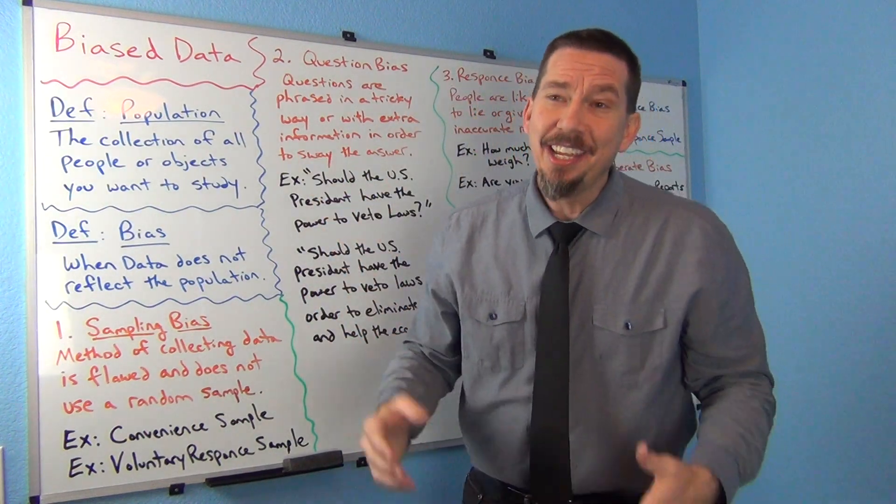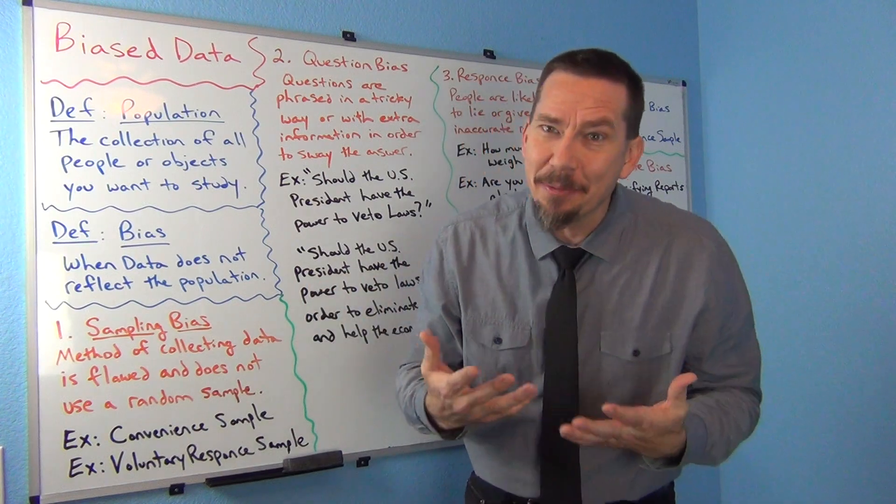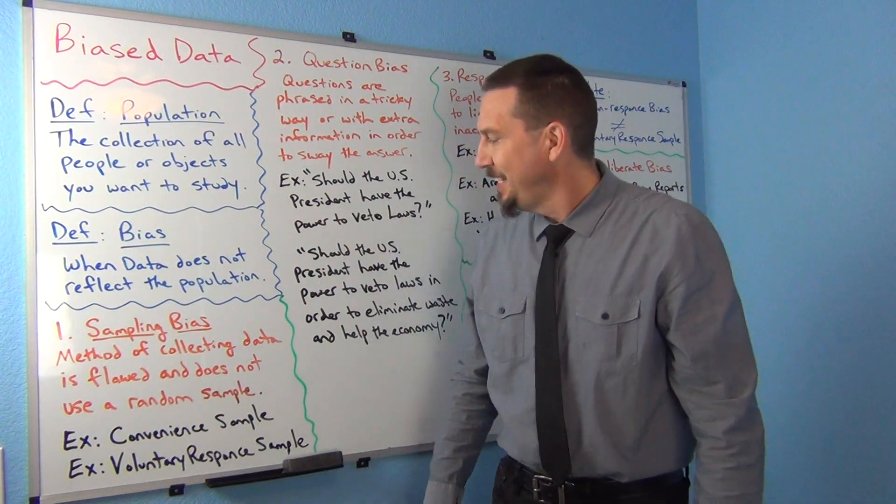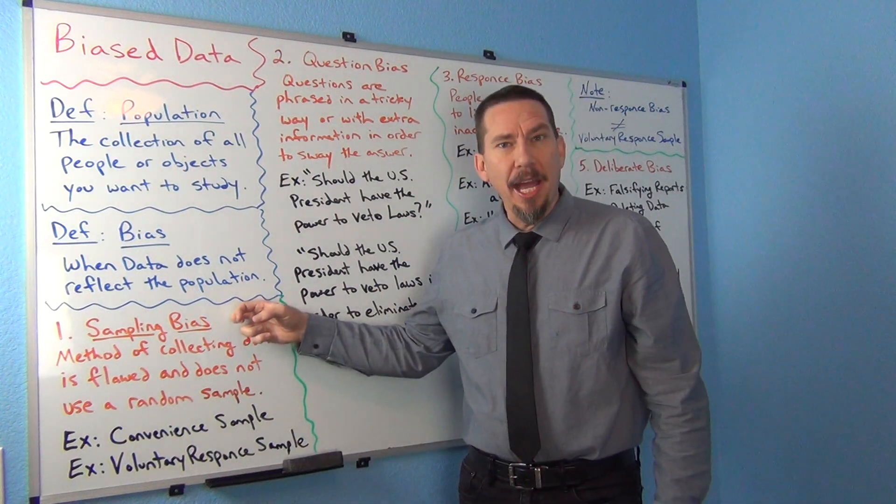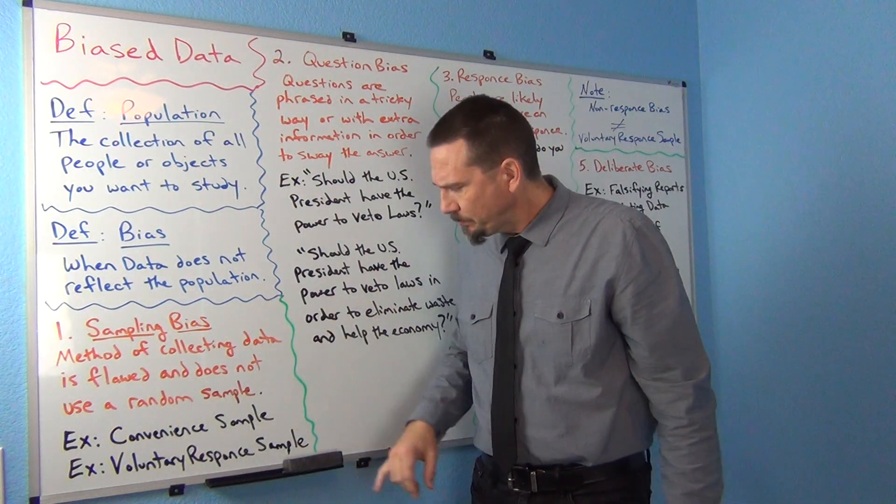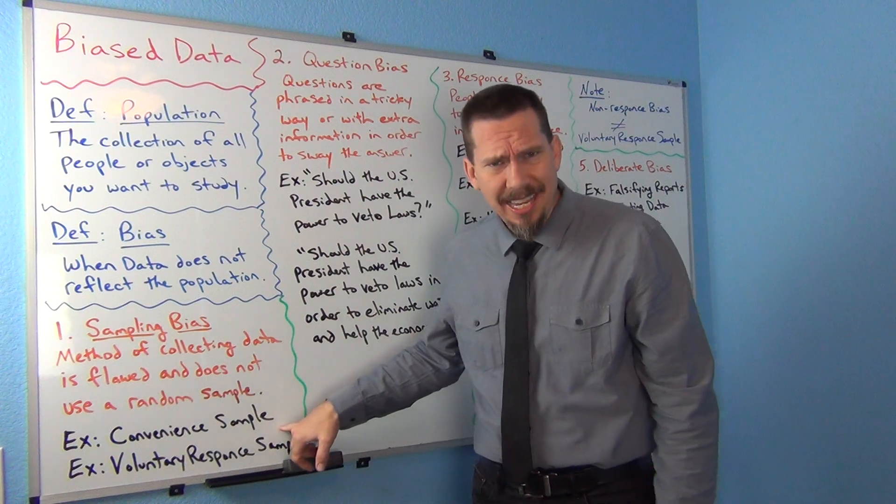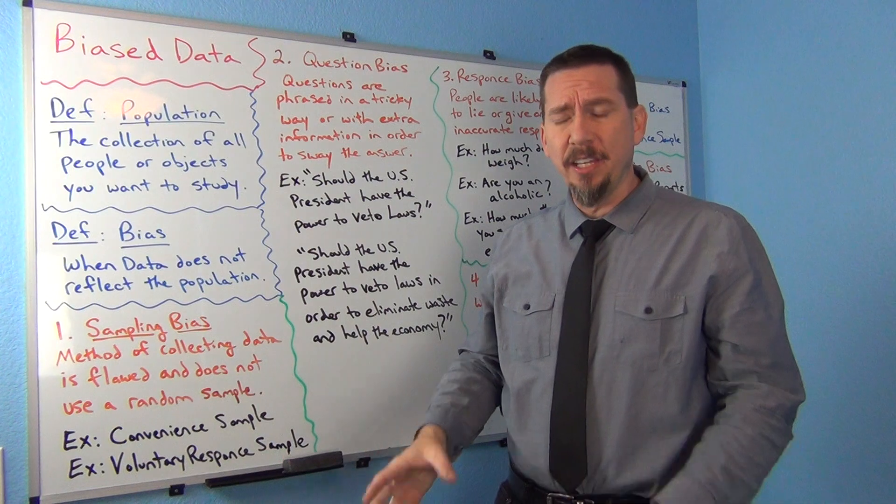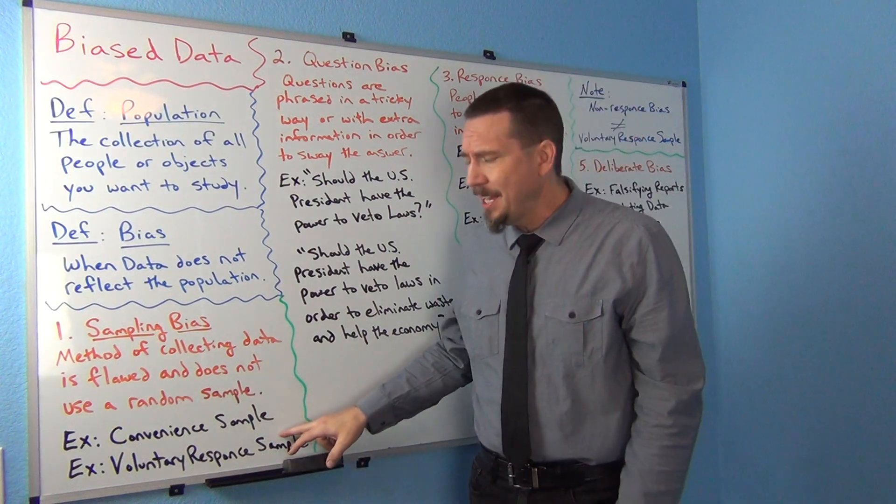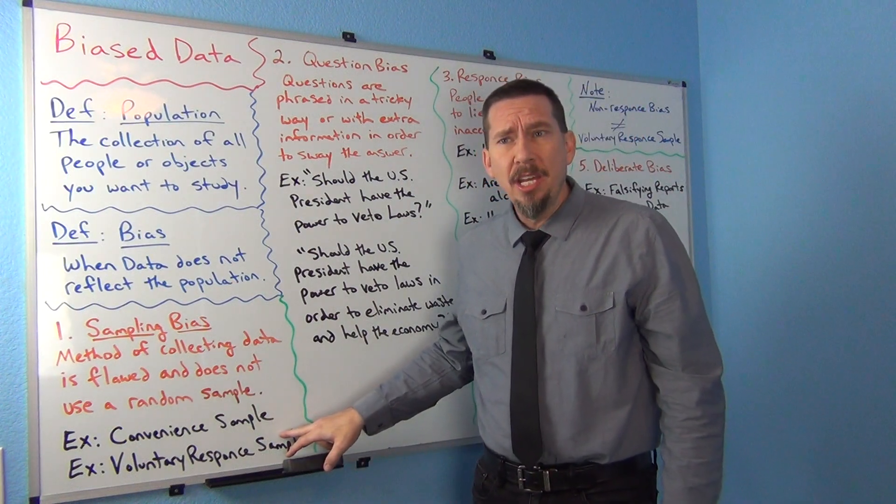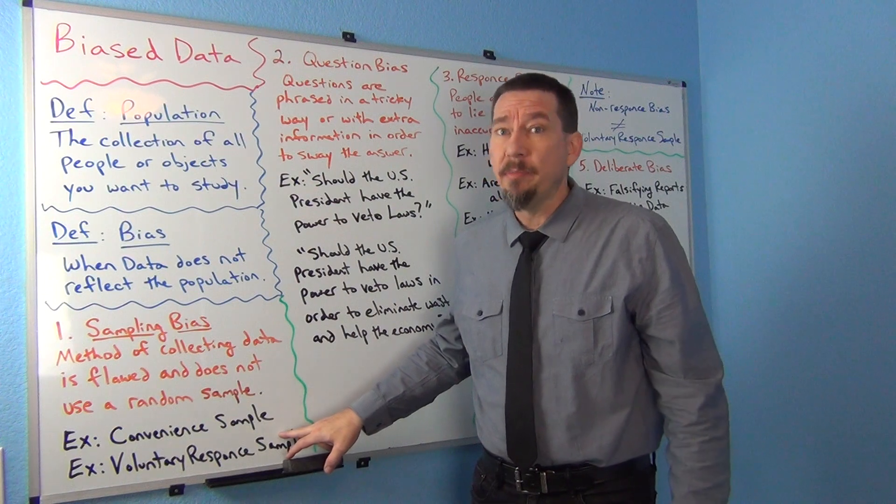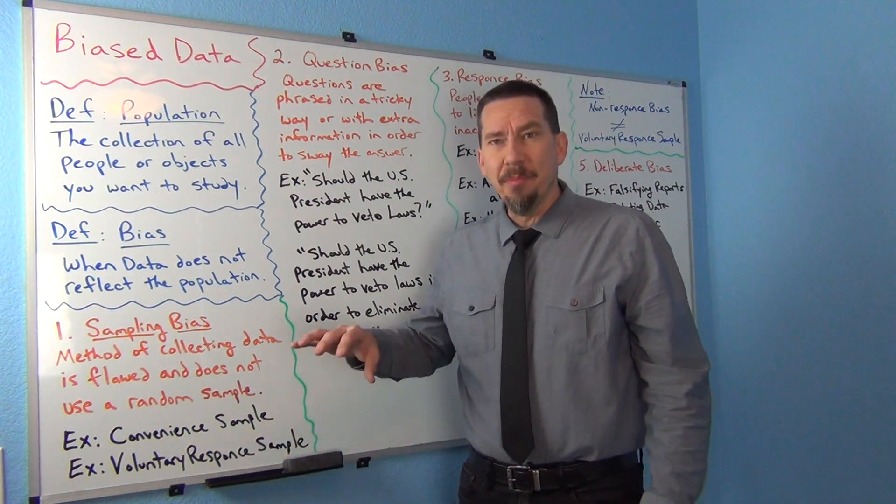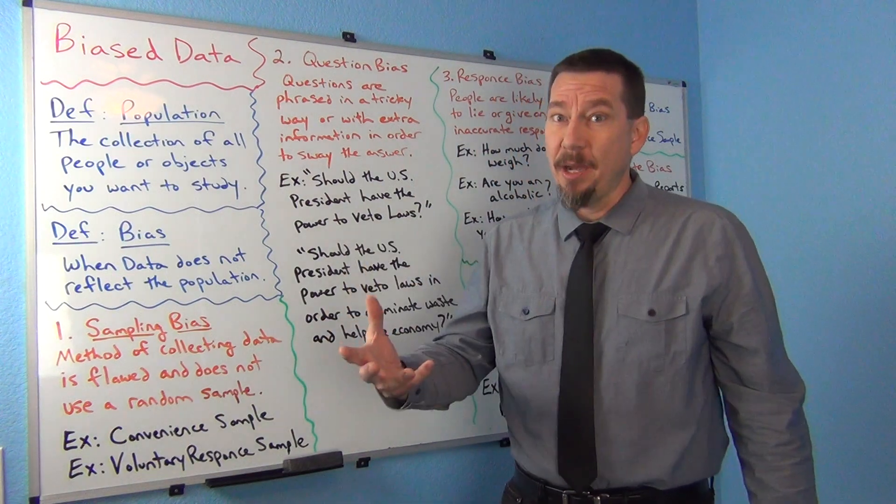If you're looking to try to figure out data on all of California and all you ask is your friends and family, your friends and family are probably not going to represent all the people in California. That would be referred to as sampling bias. The technique was bad. Also, voluntary response samples, where you put a survey out into the world and allow anybody to fill it out, are not very reflective of populations. Both of those would be prime examples of sampling bias.